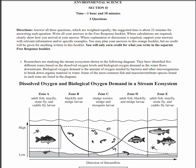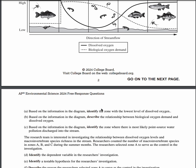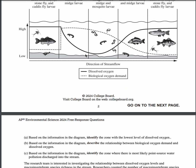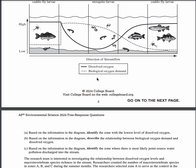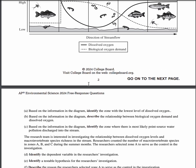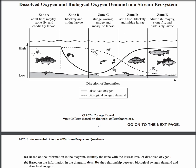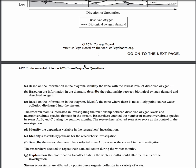For question one, we're given a graph comparing the dissolved oxygen (DO) and the biological oxygen demand in a stream ecosystem. For part A, the answer is zone C, as that's where the DO line is the lowest. For part B, there's an inverse relationship — the higher the DO, the less the biological oxygen demand, and vice versa. For part C, the answer is zone B, as that's where the amounts for each variable change from being constant to varying, which is where the non-point source pollution was introduced.